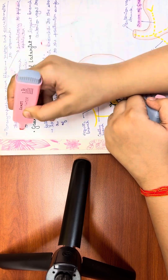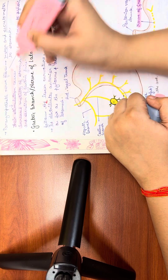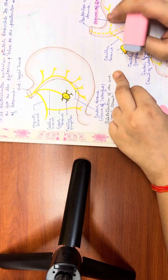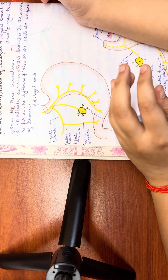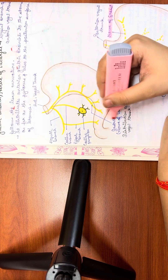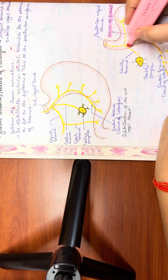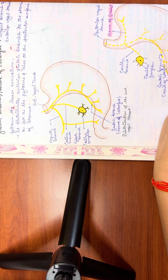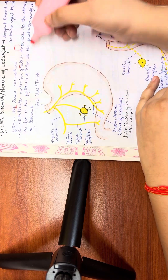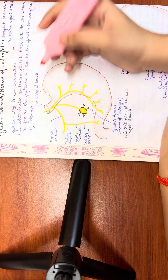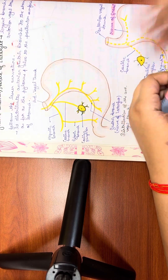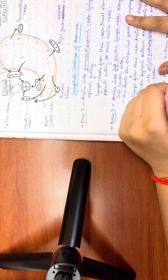Parasympathetic nerve fibers are motor and secretomotor to the stomach, inhibitory to the pyloric sphincter, and their stimulation causes increased gastric motility and secretion of gastric juice. The nerve of Latarjet is the largest branch of the anterior vagal trunk, which follows the lesser curvature and distributes anterior gastric branches to the stomach as far as the pylorus, and also to the posterior surface of the stomach.